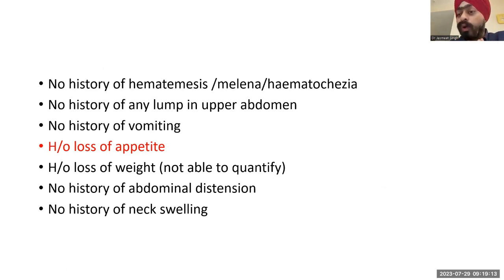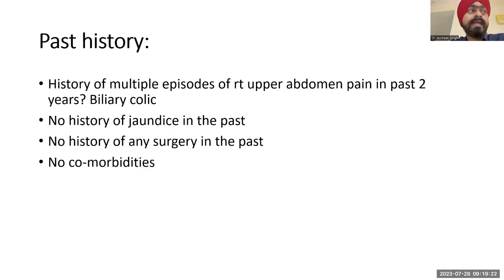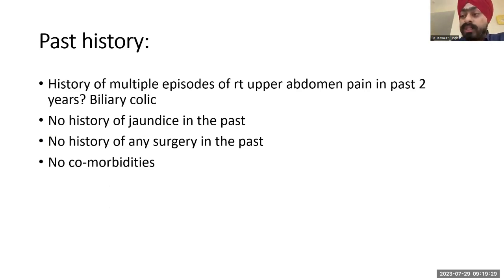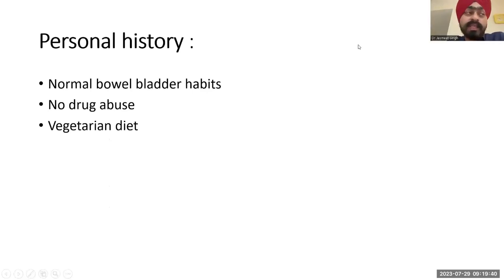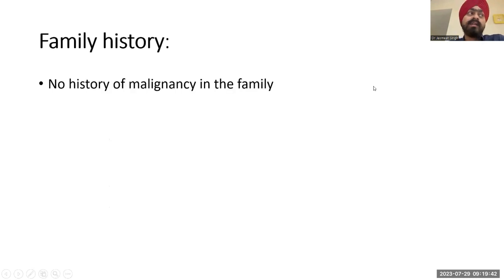There is no history of hematemesis, melena, or hematochezia. No history of any lump in the upper abdomen, no history of vomiting. History of loss of appetite is present. History of loss of weight has been told by the patient's relatives, though the patient has not quantified it. No history of abdominal distension or neck swelling. No history of jaundice in the past, no prior surgeries, no comorbidities. Patient has normal bowel habits, no drug abuse, consumes a vegetarian diet. No family history of malignancy.